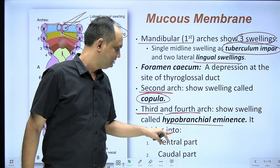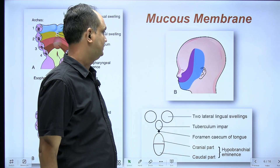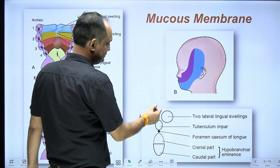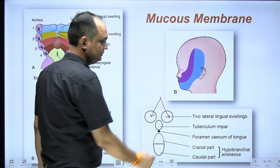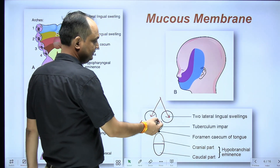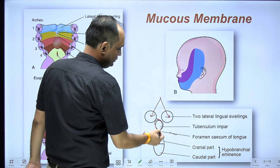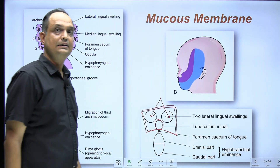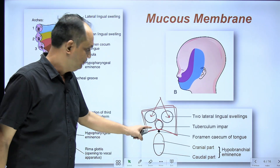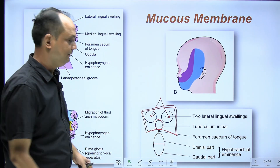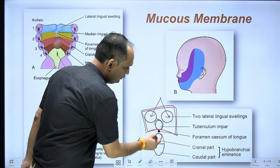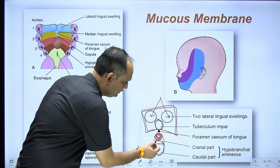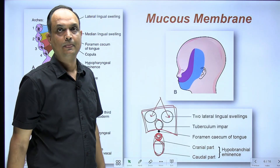The hypobranchial eminence further divides into ventral and dorsal aspects. In the diagram, you can see: the first pair of right and left lateral swellings, the tuberculum impar — all developing from the first pharyngeal arch — then behind that the foramen cecum, followed by the copula, and then the hypobranchial eminence.